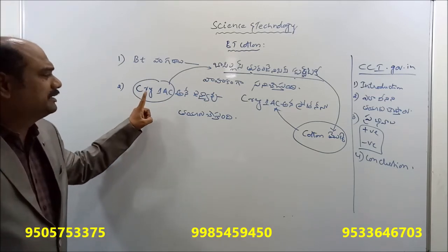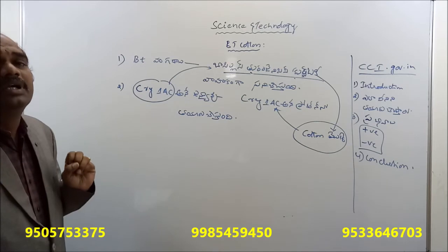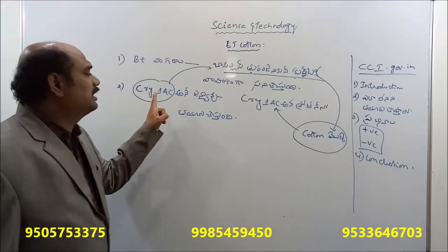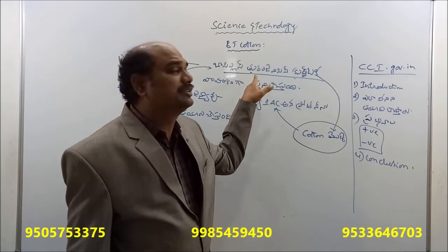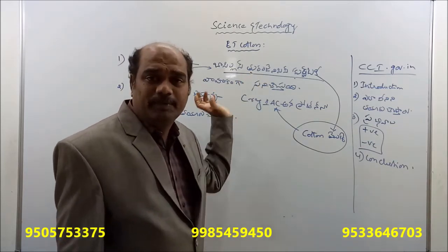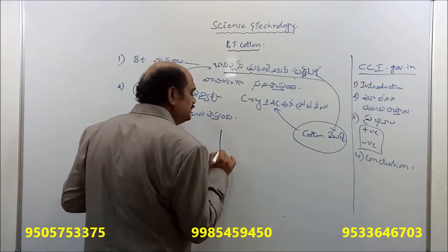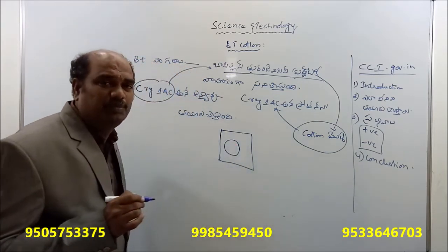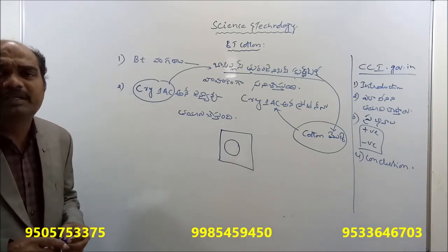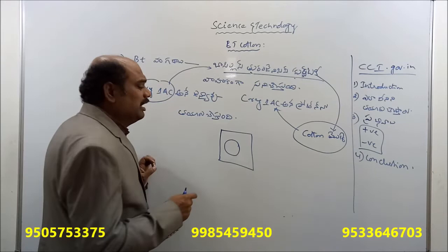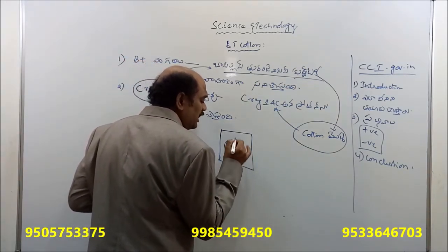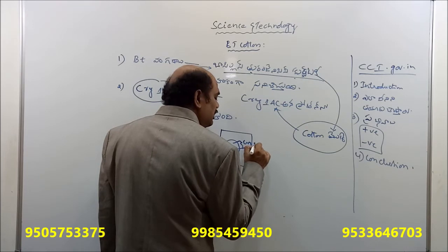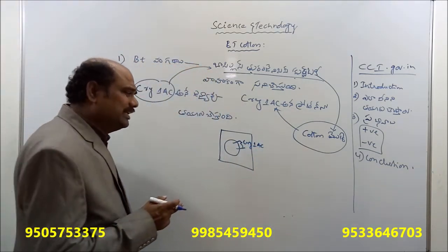This is the major important concept of the mechanism of production. Let's repeat: Crystal 1A is a gene. The gene is responsible for protein synthesis. Crystal 1A is a gene that produces a protein via the Bacillus thuringiensis mechanism. Bacillus thuringiensis is a bacteria in this form.